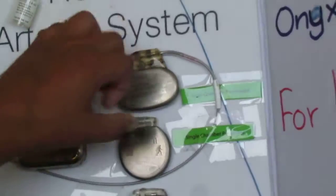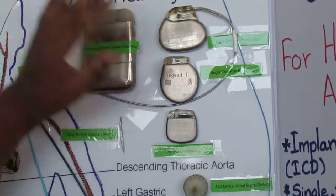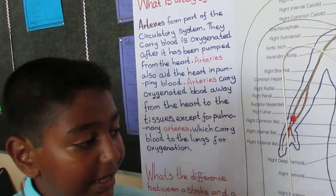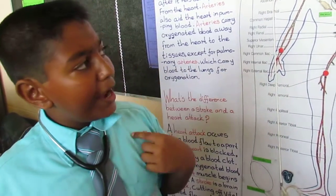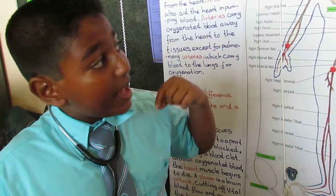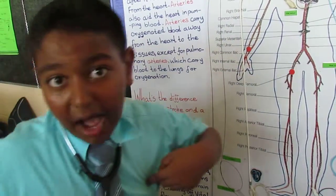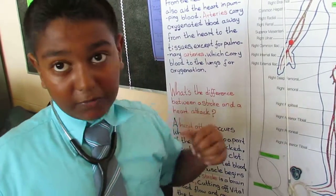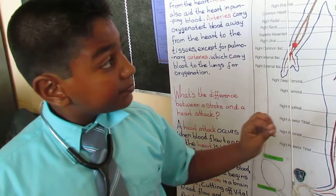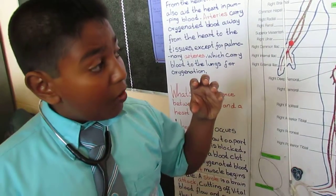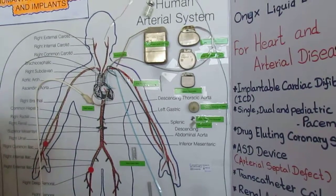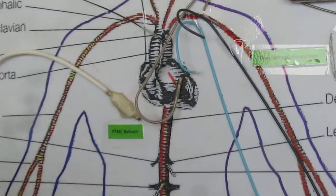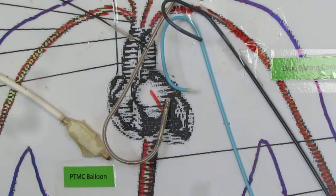These are pacemakers. The doctor takes a cut through the shoulder and sends a pacemaker lead inside our heart, then puts it into a pocket under our shoulder. When the heart pumps too slowly, the pacemaker gives an electric shock to pump it faster.